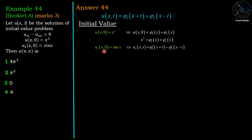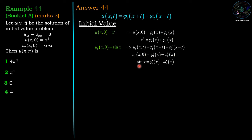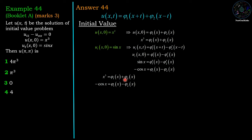Now applying the second initial condition: u_t(x,0) equals sin(x). Differentiating u with respect to t gives φ₁'(x + t) minus φ₂'(x − t). Evaluating at t equals 0 gives φ₁'(x) minus φ₂'(x), and this equals sin(x). Therefore sin(x) equals φ₁'(x) minus φ₂'(x). Integrating both sides with respect to x, we get minus cos(x) equals φ₁(x) minus φ₂(x).